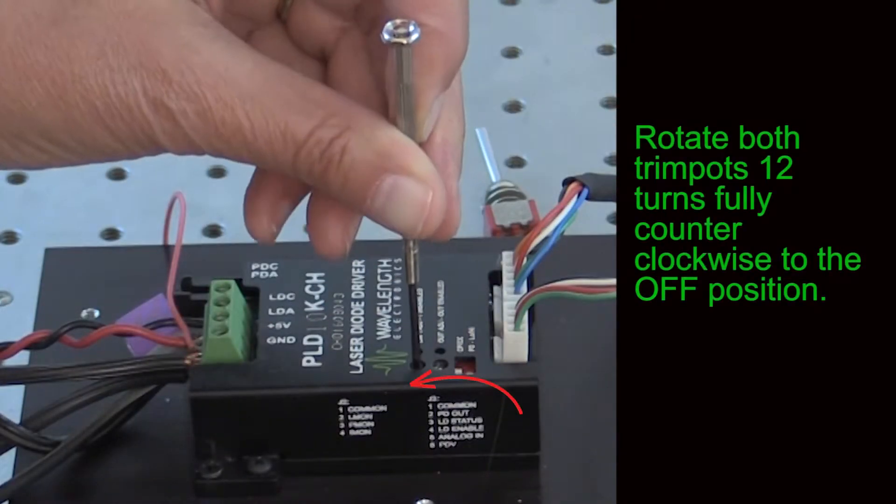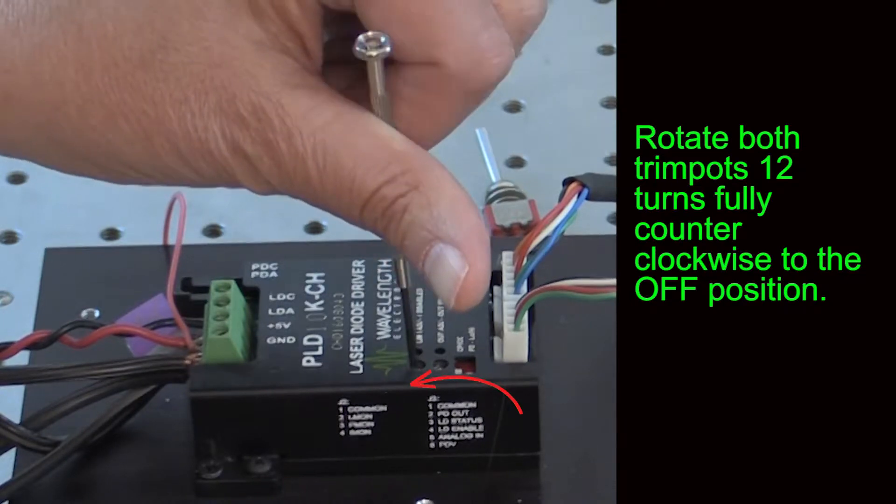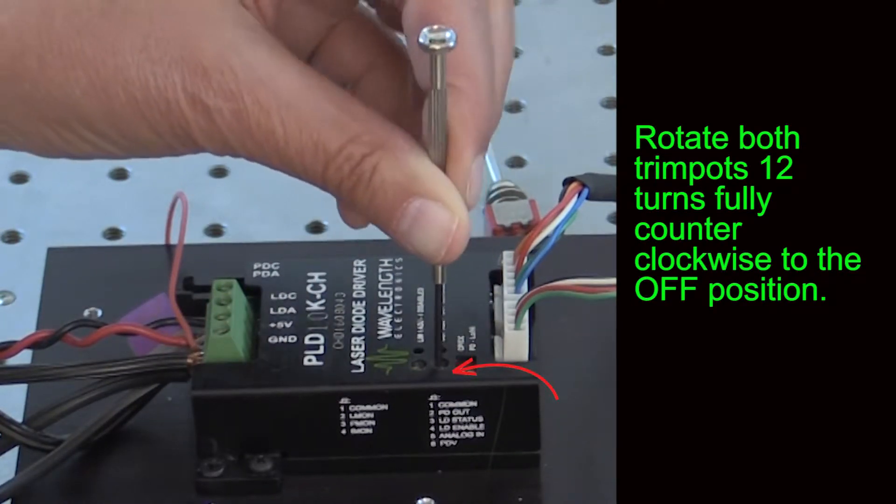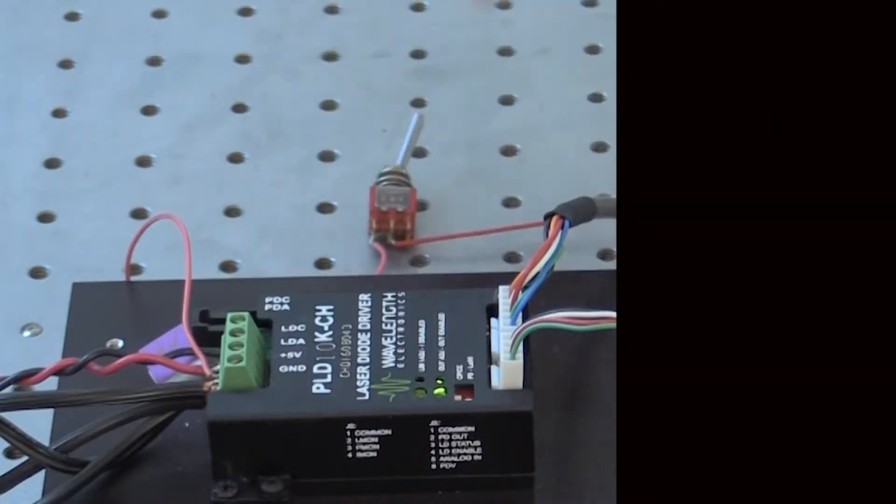For safety, rotate both the current limit and set point trim pots 12 turns fully counter clockwise to the off position. Then turn on the power supply. Now we can monitor settings.